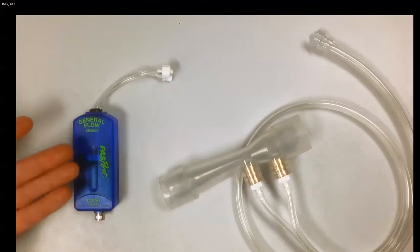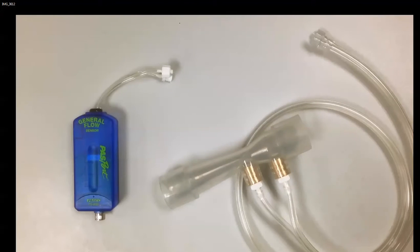On the left-hand side, we have the general flow sensor. And on the right-hand side, we have the Venturi tube. These are used together to investigate flows.